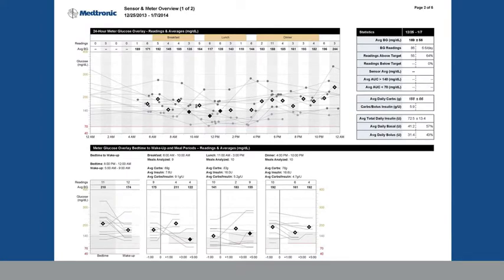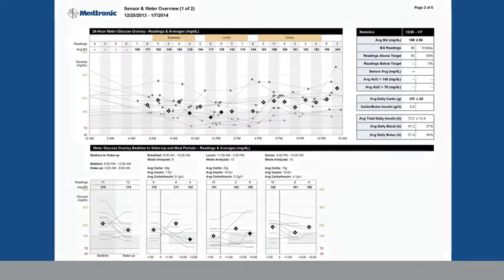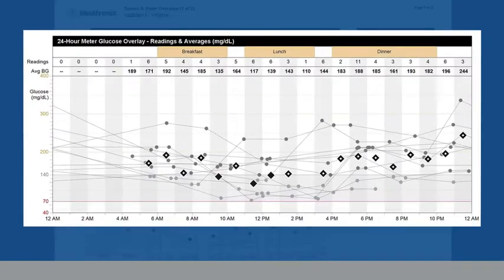There's a lot to look at, so Connor starts at the top, focusing on the graph with all the dots, the 24-hour meter glucose overlay. He looks at the dots that represent his blood glucose readings and sees if there are any patterns. He notices that most of his glucose falls outside of the gray shaded area which represents a normal range, 70-140 mg per deciliter.